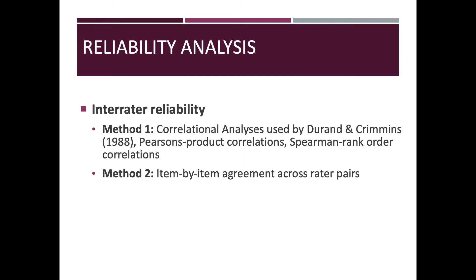For the reliability analysis, researchers try to establish the reliability of an instrument like the Motivational Assessment Scale. One approach: if I administer the MAS and you administer the MAS to the same parent reporting on their child, we should produce the same result if there's reliability in the tool. If we produce different results, that could indicate a problem with reliability — this is inter-rater reliability. Another would be test-retest: if I administered the tool this week and again next week, would it produce the same results?